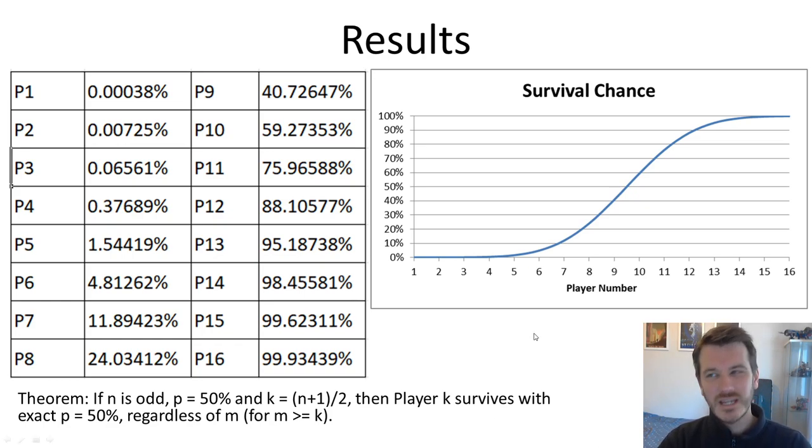Player 18, it is still technically possible that 17 people died before you, and you're standing on node 17, having to make a 50-50 guess on node 18.